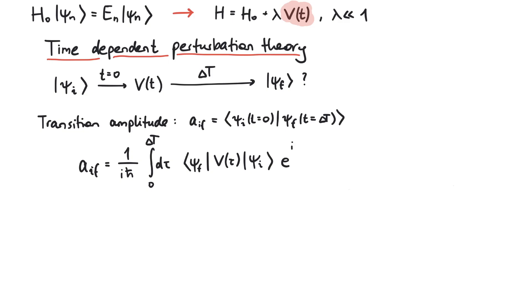Finally, we add an exponential function e to the i omega if tau, where omega if is defined to be the energy difference of the final state minus the initial state divided by h-bar. Delta t can be finite, it can be infinity, whatever the problem tells us.